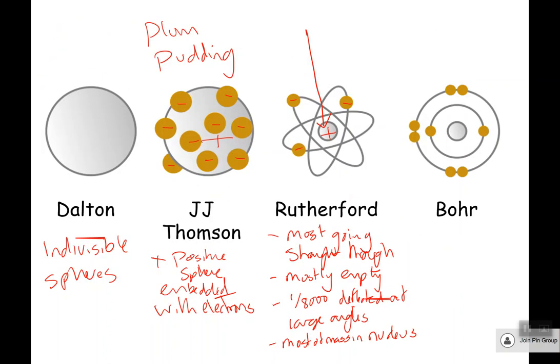And then we get on to Bohr. Now Bohr didn't do much difference. He said that there was a positive nucleus at the center, just like Rutherford's. But what he said was that the electrons were around the outside, but they're in shells. And in the last video, we said shells are essentially energy levels that these electrons are in. You can have a certain number of electrons in each shell, in each energy level, and they can move around as well. We'll come on to that in just a bit.